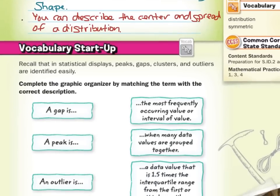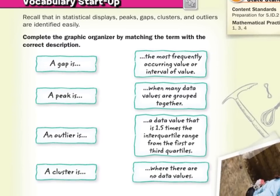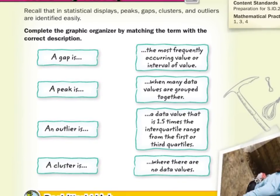So with our vocabulary startup, recall that in statistical displays peaks, gaps, clusters, and outliers are identified easily. We're going to complete the graphic organizer by matching the term with the correct description. A gap is where there are no data values. A peak is the most frequently occurring value or interval of value. An outlier is a data value that is one and a half times the interquartile range from the first or third quartiles, which then lastly leaves us with a cluster. A cluster is when many data values are grouped together.